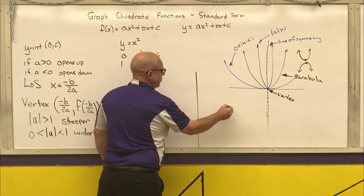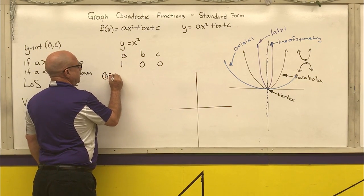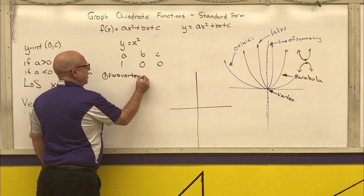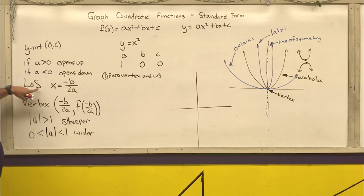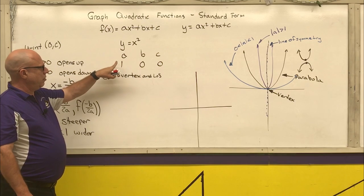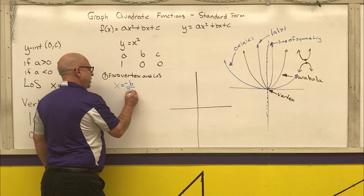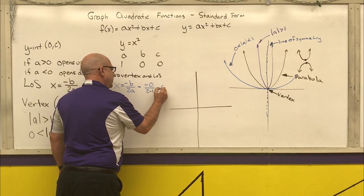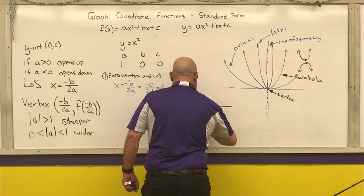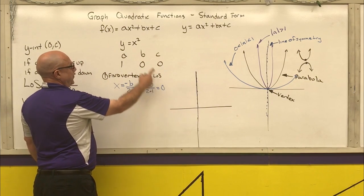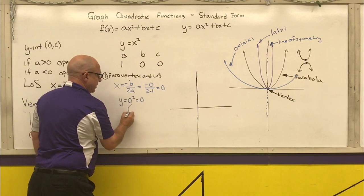When graphing any quadratic in standard form, the first thing you always want to do is find the vertex and line of symmetry. The line of symmetry uses x = -b/2a, which here is negative 0 over 2 times 1, which equals 0. Then take that 0 and put it back into the original function: y = 0² = 0. So the vertex is at (0, 0).